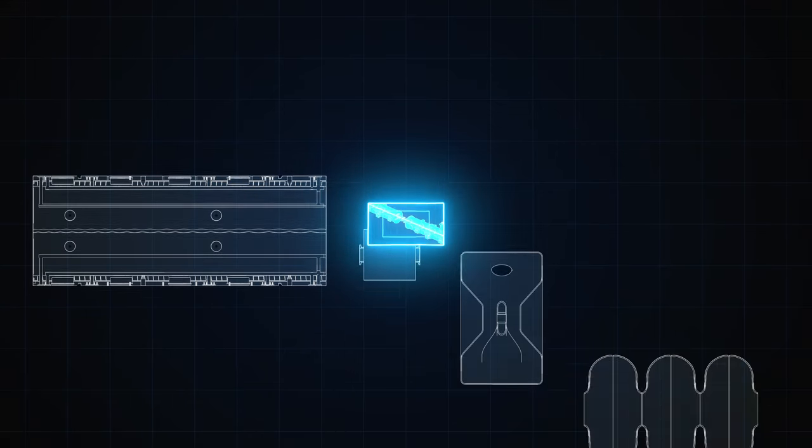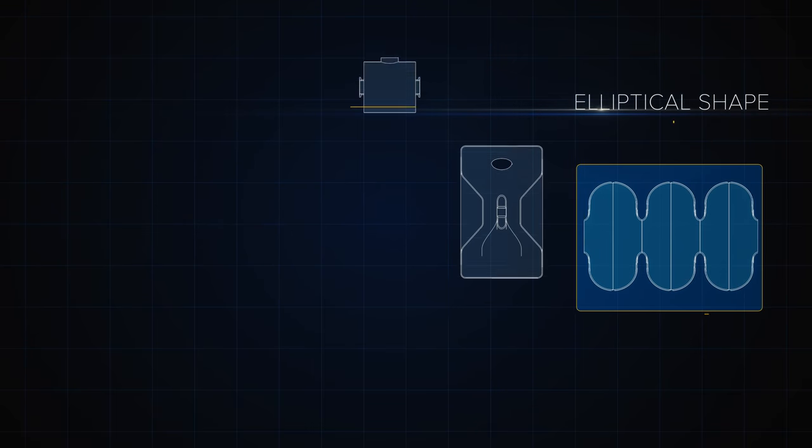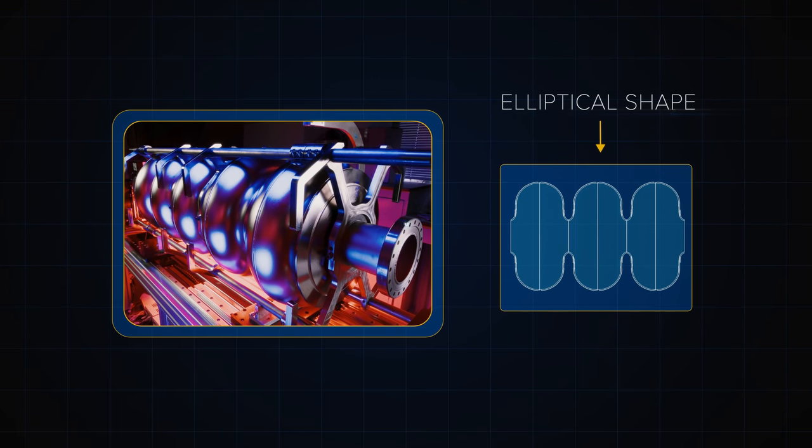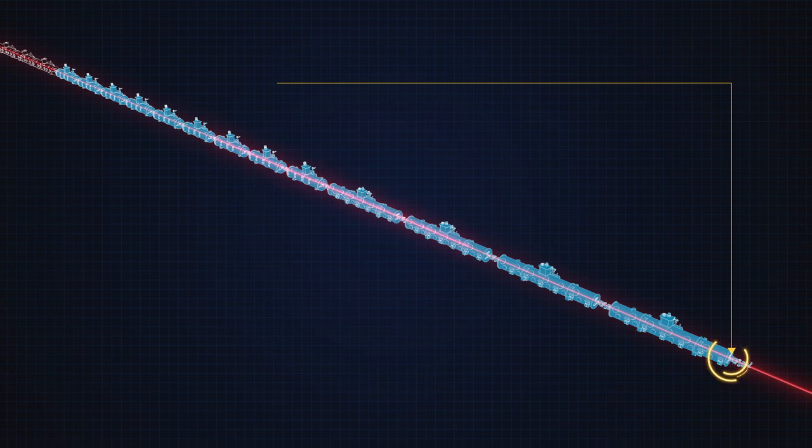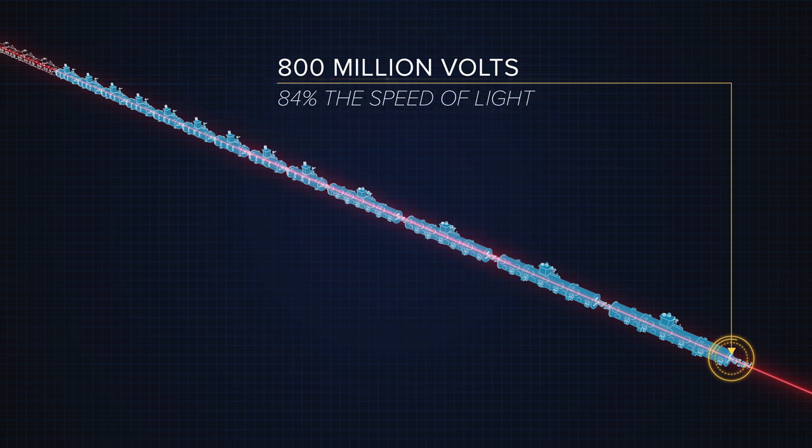These cavities also feature a different elliptical shape to optimize the energy transfer to the speedier particles. Upon exiting this section, particles will have gained an energy equivalent to 800 million volts and travel at 84% of the speed of light.